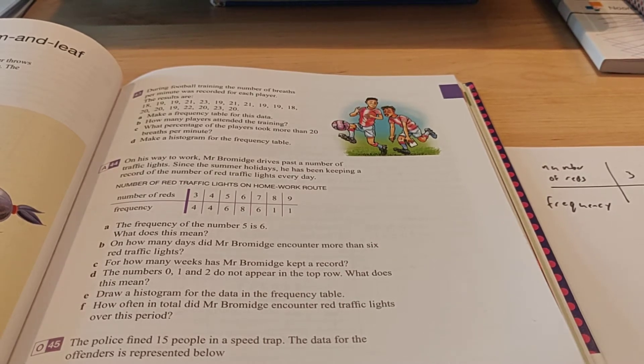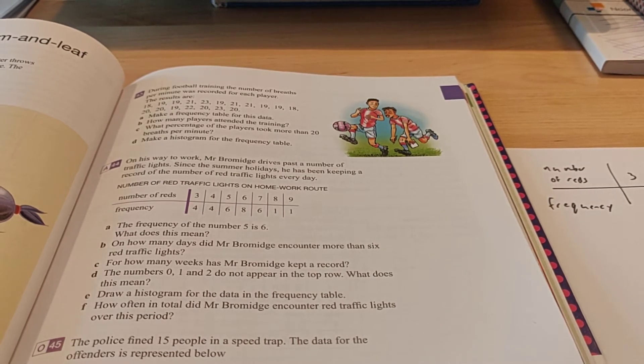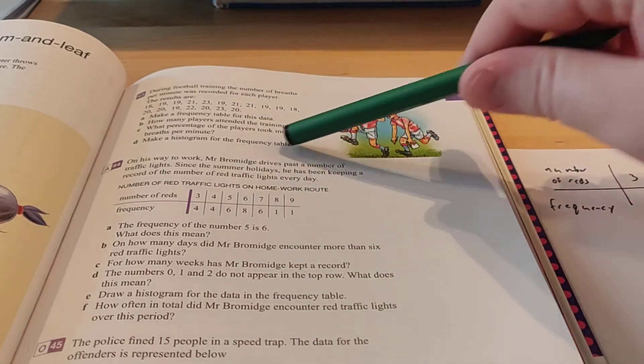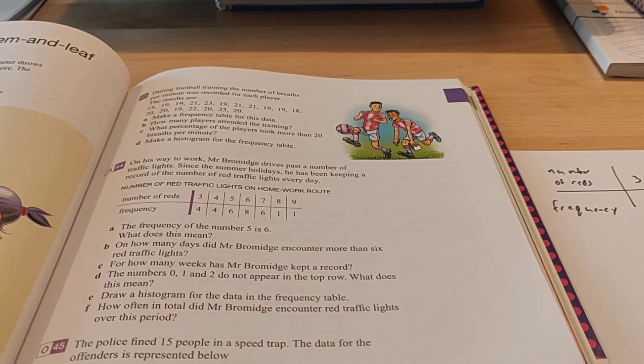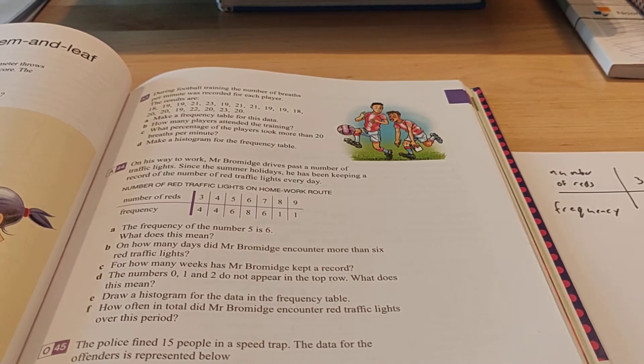Alright, this is a video for 2HD about exercise 44 from chapter 6. It says on his way to work, Mr. Bromwich drives past a number of traffic lights. Since the summer holiday, he's been keeping a record of the number of red traffic lights every day.